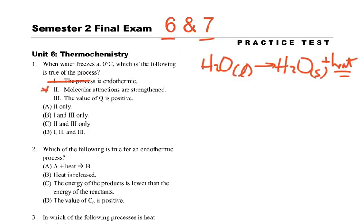And the value of Q — if heat is on the right side and given off, that means Q is released, and released Q is negative. So that is not true either. Therefore, it's two only — answer A.